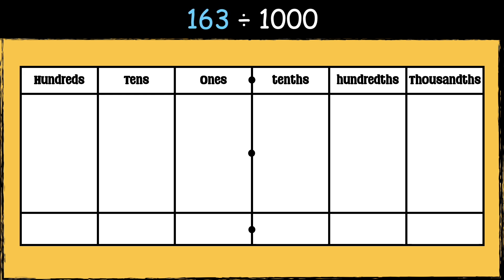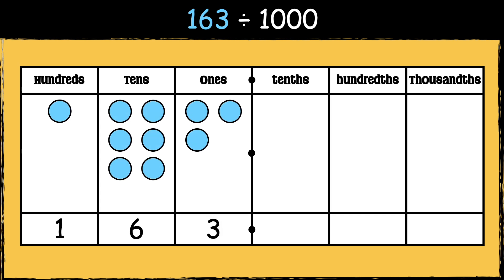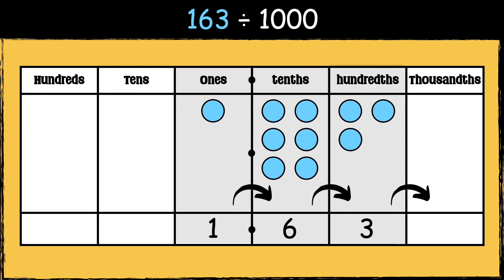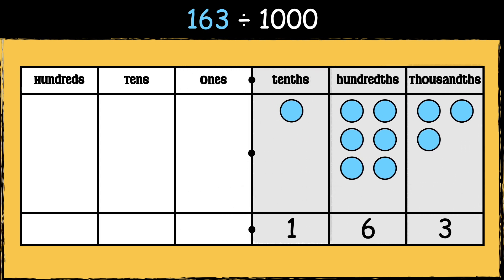Now we're going to look at three-digit numbers divided by a thousand. 163 divided by a thousand — when we divide three-digit numbers by a thousand, all three digits need to move three places to the right. So 163 becomes one tenth, six hundredths, and three thousandths. We need to use zero as a placeholder to show that there are no ones, so the answer is 0.163.